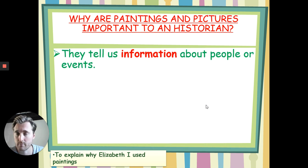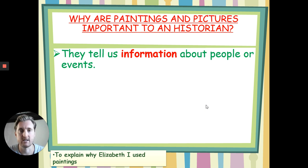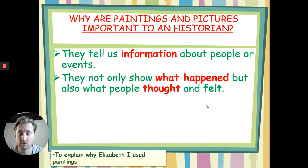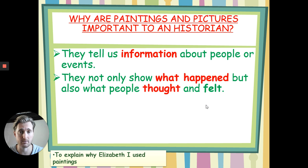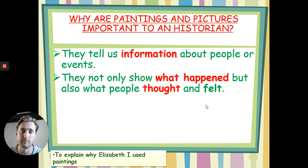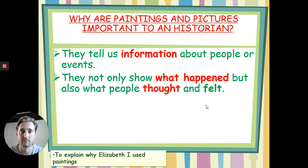So paintings are important because, obviously, when we're looking back in history, they can tell us information about people or events of the time period. They not only show us what happened, but also how people thought and felt about a particular event or a particular person. So it's not just writing it down — we can actually visually see what they believed happened at this point, and how they thought about, say, a battle, how they thought this battle went.